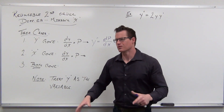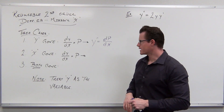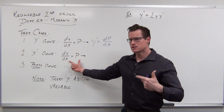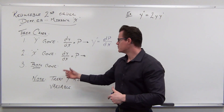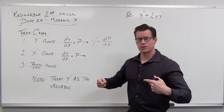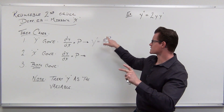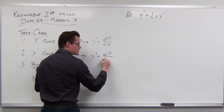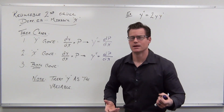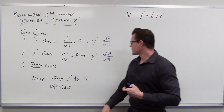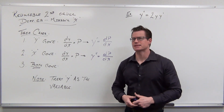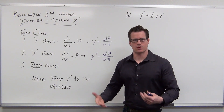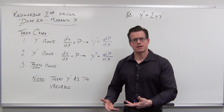Now the second case: what if x is gone? We try the same substitution — let the first derivative of y with respect to x equal p. That should reduce the order. But if x's are gone and we get down to dp/dx, we try to integrate but there are no x's. Doing an integral dx or derivatives with respect to x is going to cause a lot of problems.